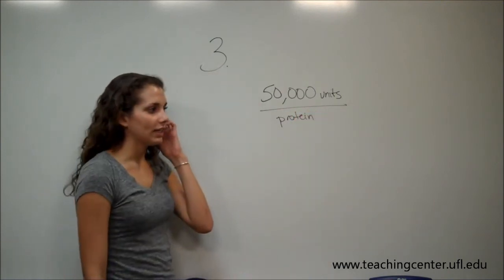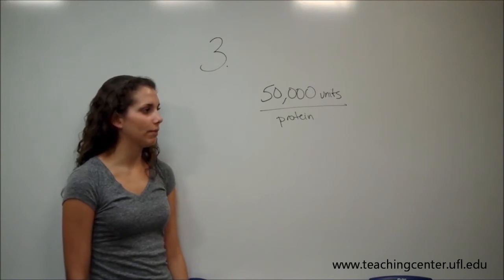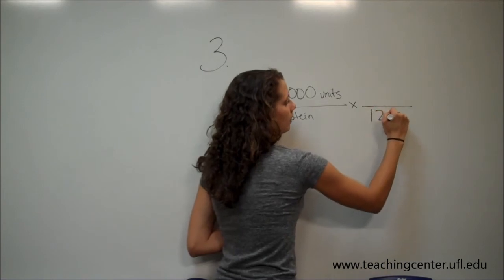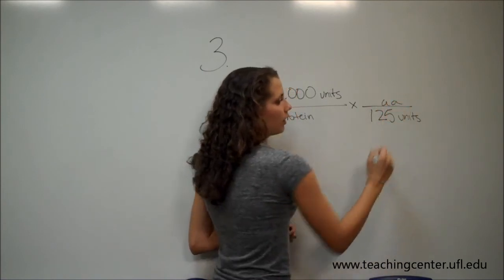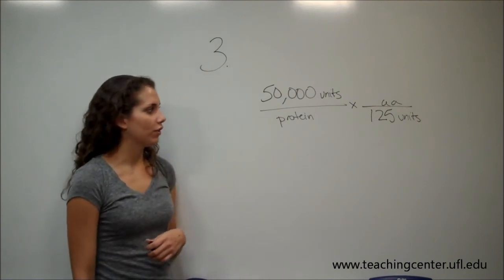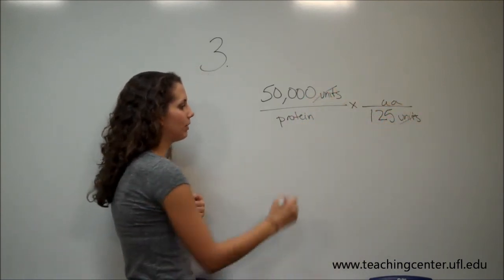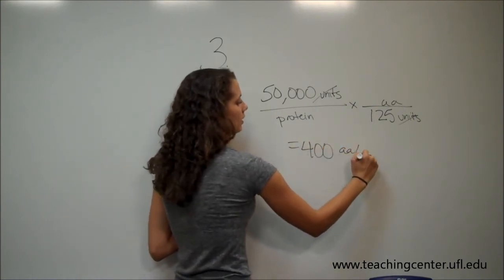And again, it says that there are 125, a weight of 125 per amino acid. So if we put the units, we can solve this. The units cancel, and we find that there is an average number of 400 amino acids per protein.